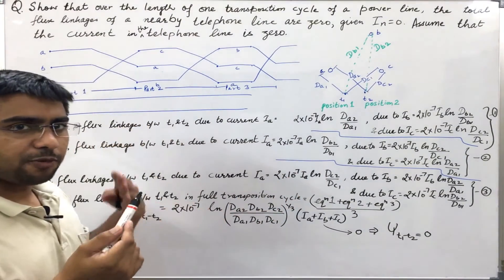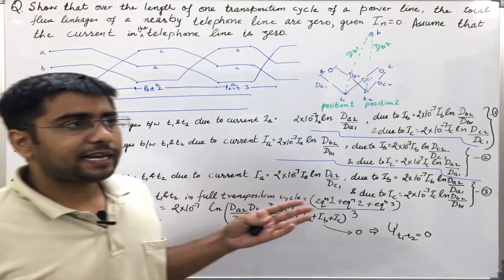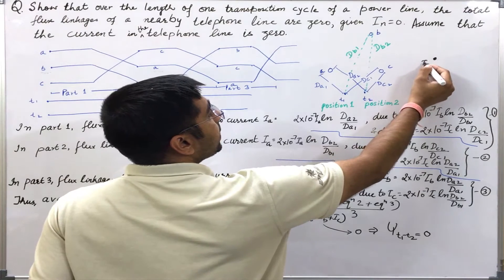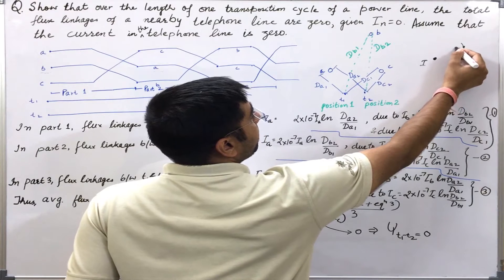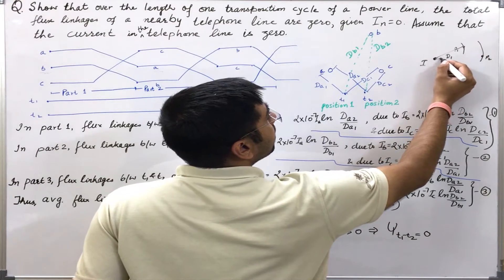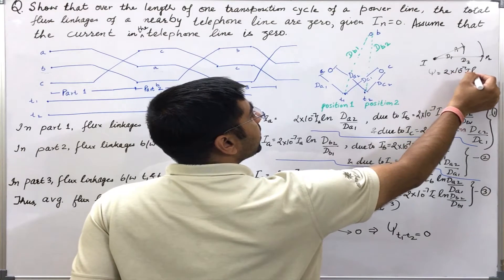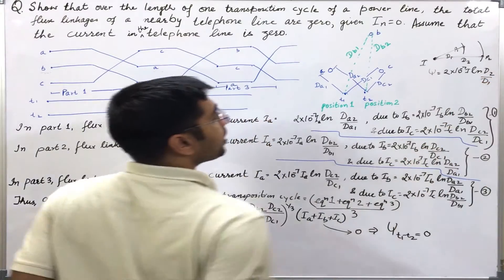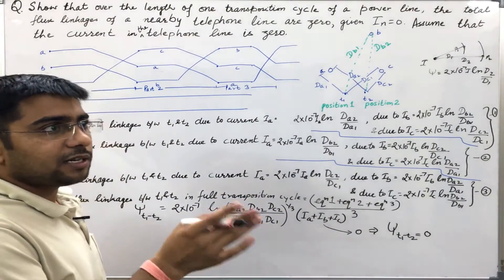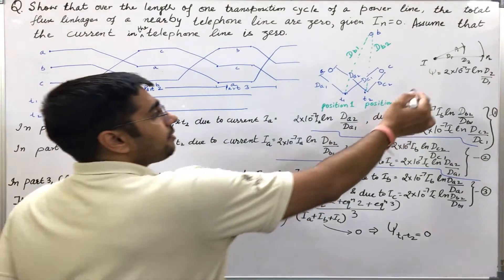Here I have used the formula derived in the first lecture of this chapter for inductance of a transmission line — the flux linkages between two points due to a current-carrying conductor. If there is a current-carrying conductor carrying current I, and the distances to points P1 and P2 are d1 and d2 respectively, then flux linkages are found to be 2 × 10⁻⁷ × I × ln(d2/d1). I could also have used the formula derived in lecture 25, but here I have chosen the simpler one.